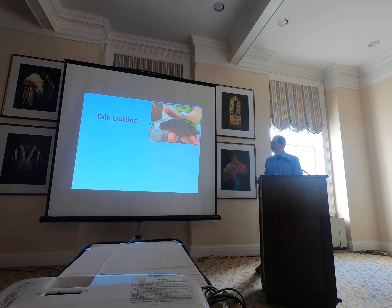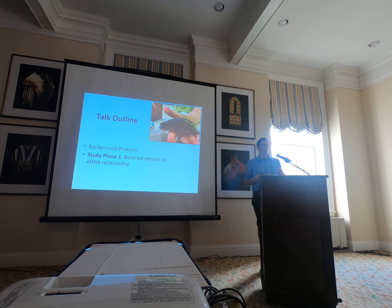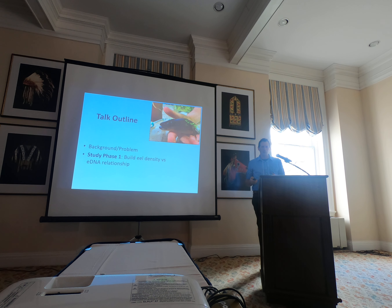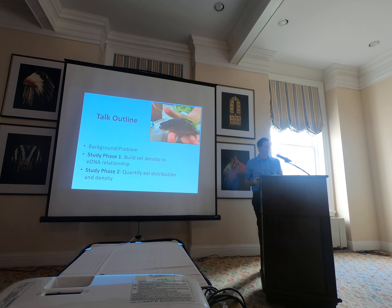Quick background on what I'm going to cover today. Starting with a bit of information about what we know about eels in the Mohawk River watershed historically. Then I'll take you through a two-phase study. In phase one, we tried to build a relationship between the quantity of environmental DNA in the water — American eel eDNA — and the actual density of eels per unit area, such as eels per hectare. With that model in hand, we went to the Mohawk watershed to make inferences not only about where American eels are located, but potentially at what abundance.